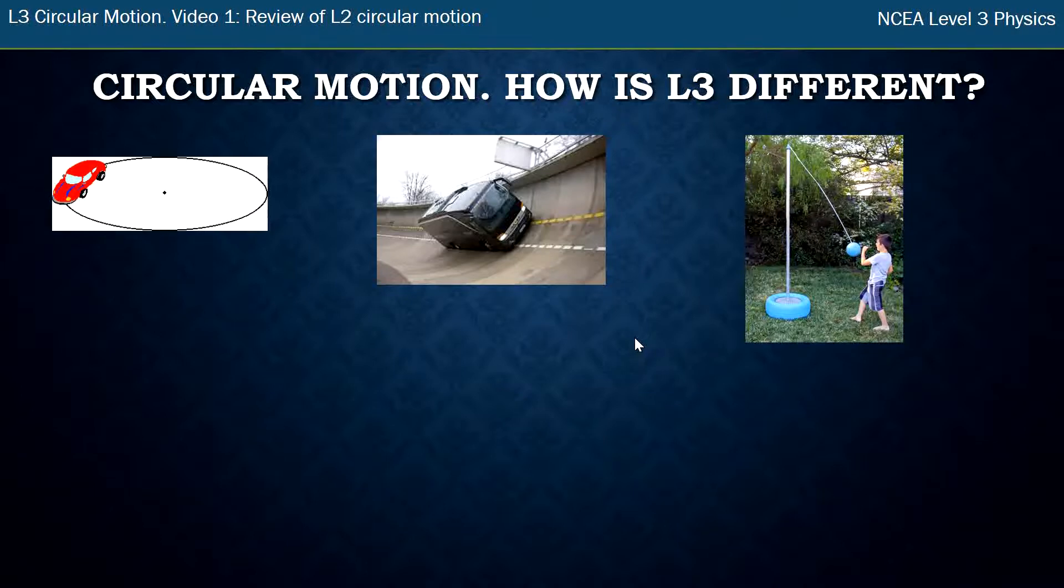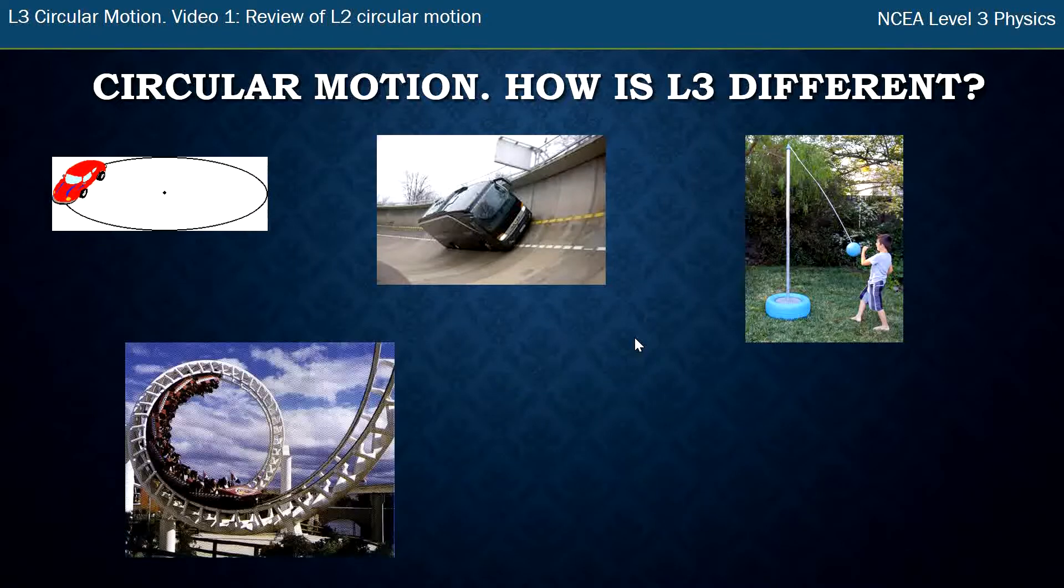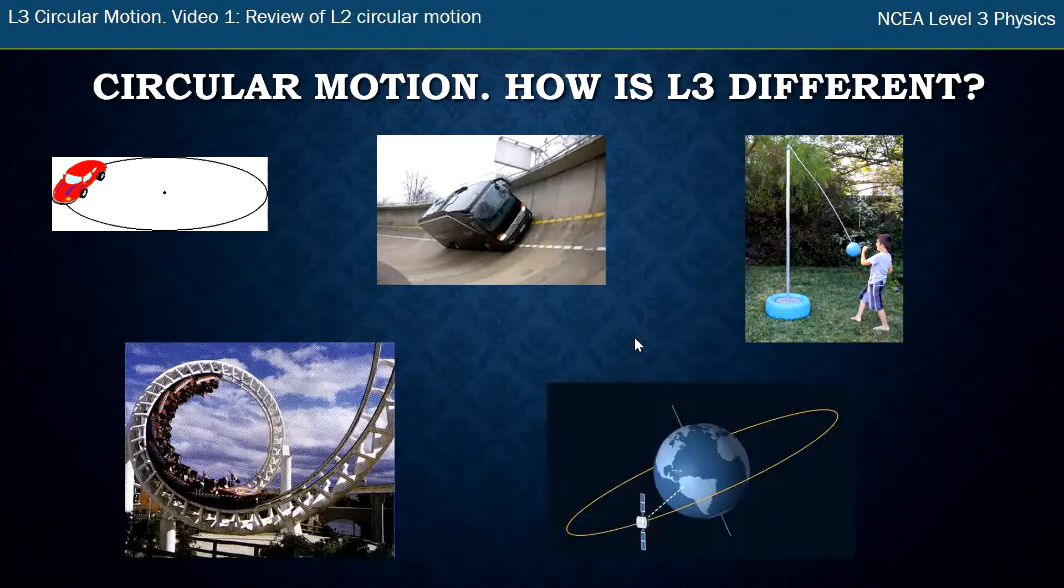We have things like tetherball, where the ball's going around the pole in a circle, but there's forces at angles. There's a force obviously along the string there. We have vertical circles, and it turns out the sizes of forces are different at the top and the bottom of vertical circular motion. And we talk about orbits as well, so things in space going around large objects like planets or moons or the sun.